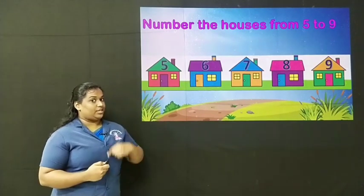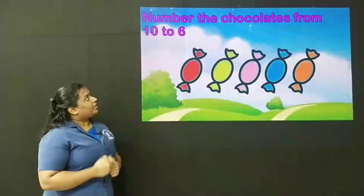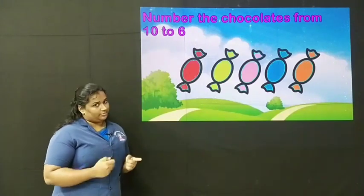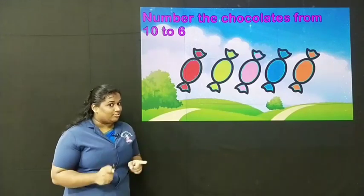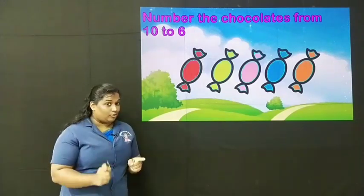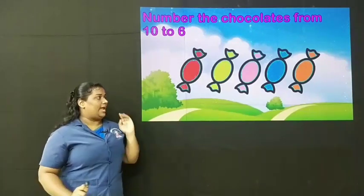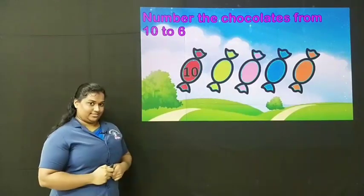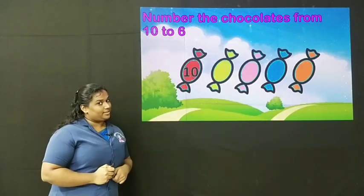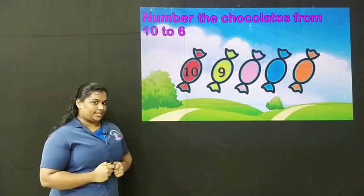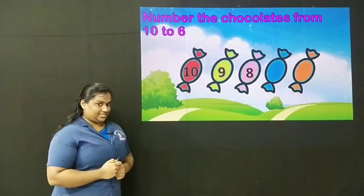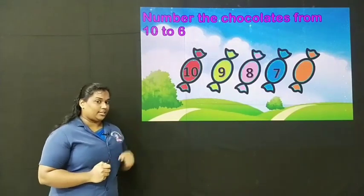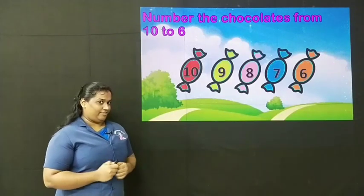Now let's go to the next question. Number these chocolates from 10 to 6. 10 to 6 — shall we count forward? No, we have to count backwards. So count backwards from 10 to 6 and number these chocolates. The red chocolate gets number 10, the yellow chocolate gets number 9, the pink chocolate gets number 8, the blue chocolate gets number 7, and the last chocolate gets number 6. Very good.